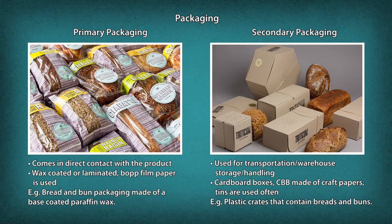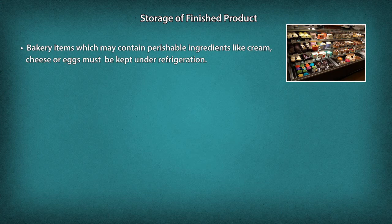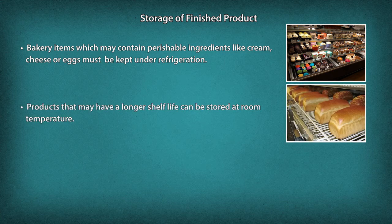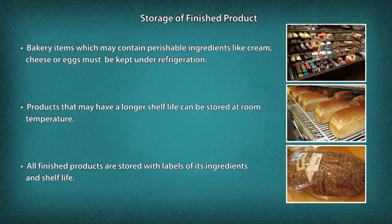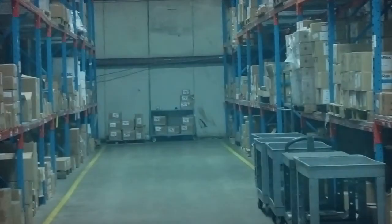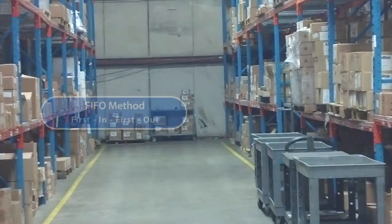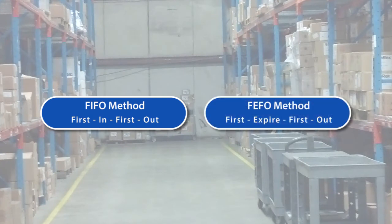Plastic crates are also used to contain breads and buns. For storage of finished products, bakery items containing perishable ingredients like cream, cheese or eggs must be kept under refrigeration. Products with a longer shelf life can be stored at room temperature. All finished products are stored with labels of their ingredients and shelf life. Stock rotation methods like FIFO and FEFO are used to rotate finished products.